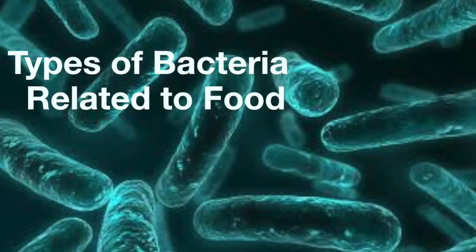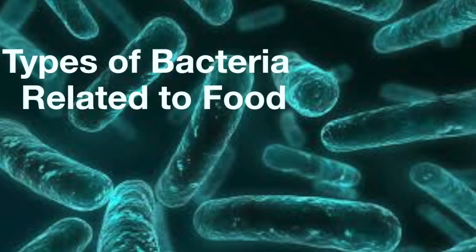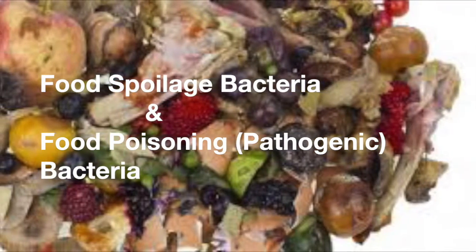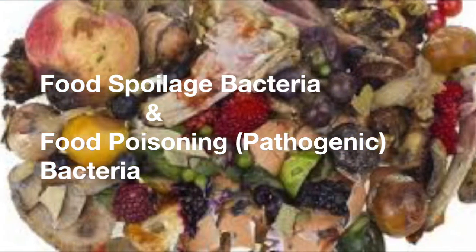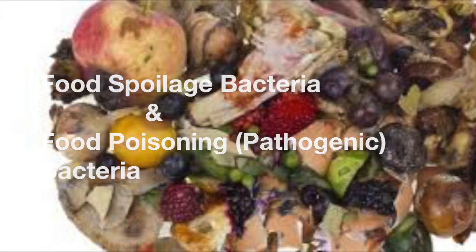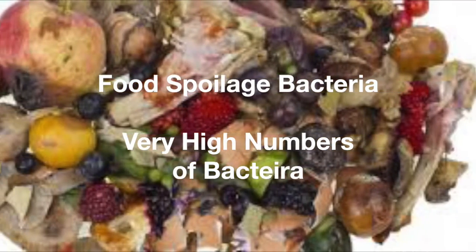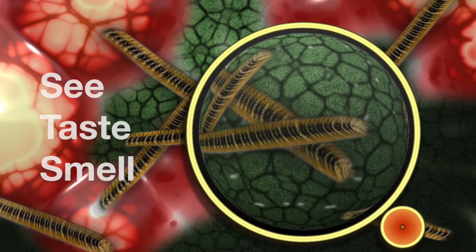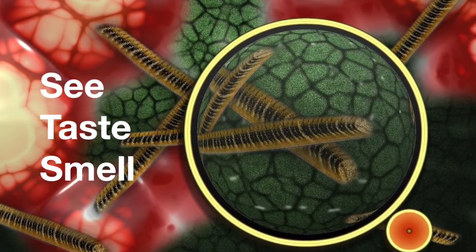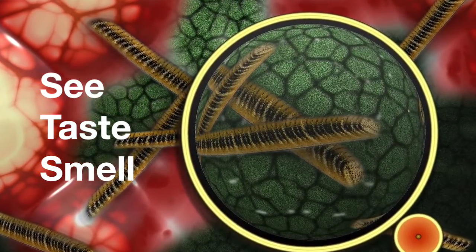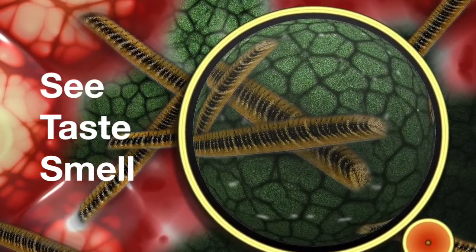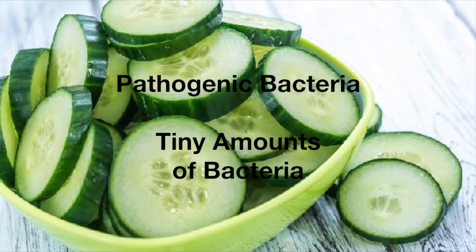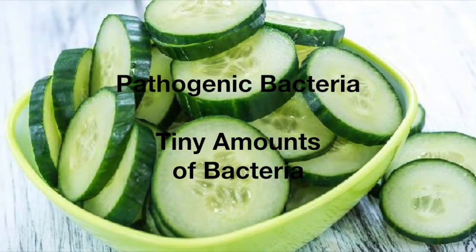There are two different types of bacteria involved with food. The first is food spoilage bacteria, and the second is food poisoning or pathogenic bacteria. Food spoilage bacteria are easily detectable as they make the food go off — we are able to see it, taste it, and more commonly smell it. These act as warning signs to say: do not eat this.